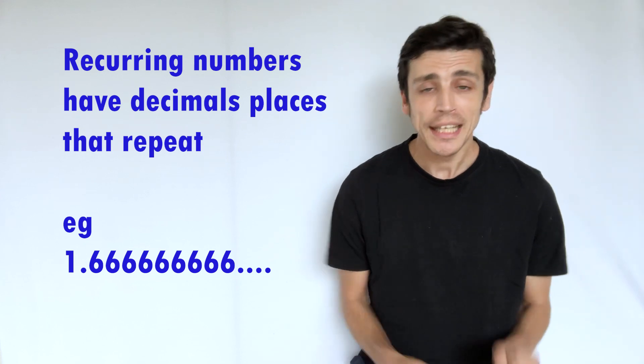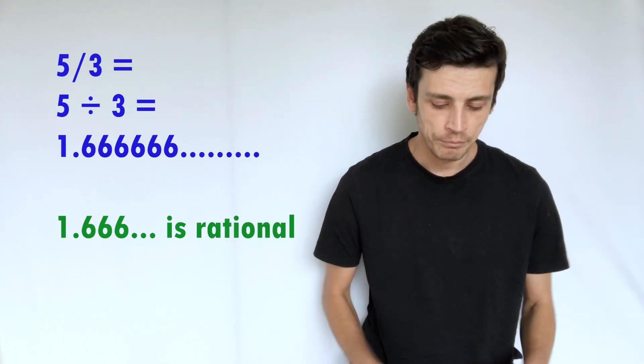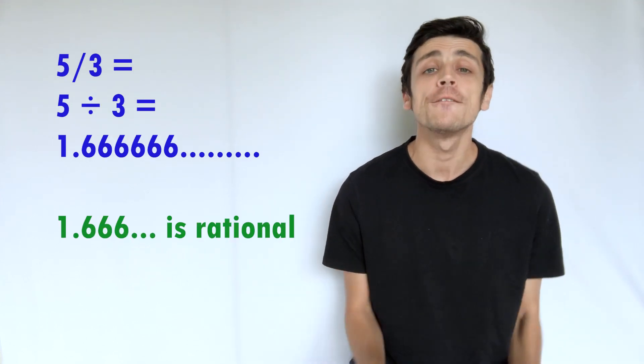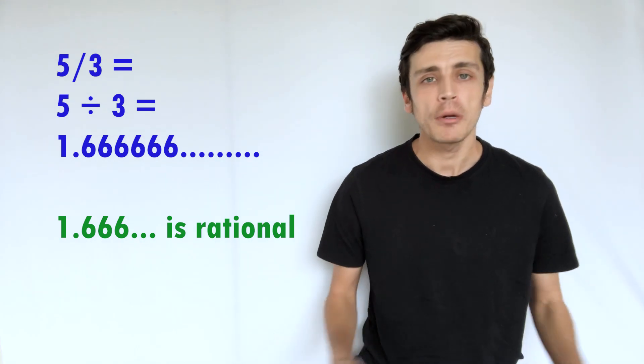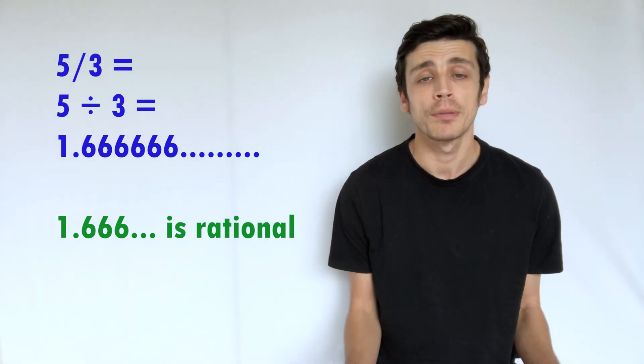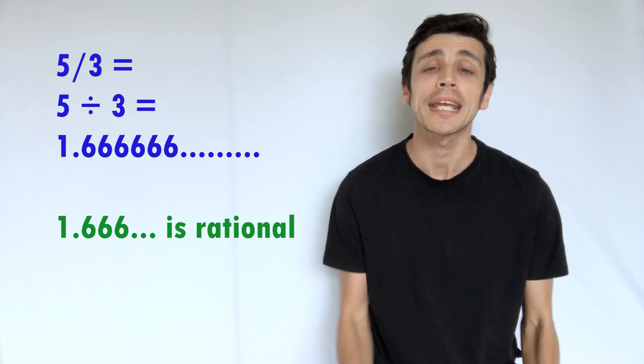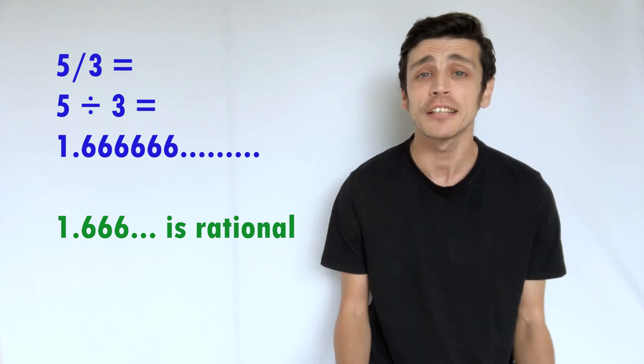This actually can be expressed as a fraction. So if we have 5 divided by 3, that would in fact give us this particular number, the 1.6 recurring. So again, this number then is actually rational.